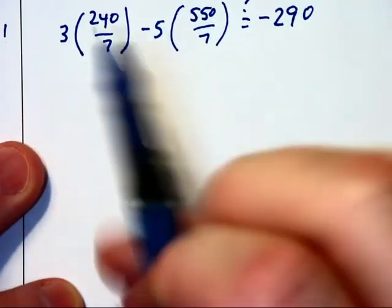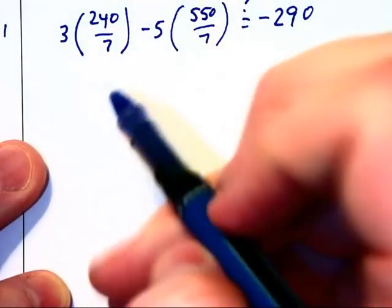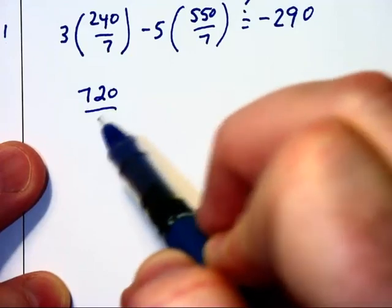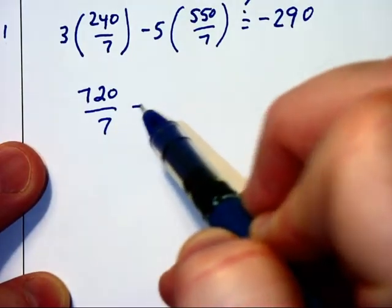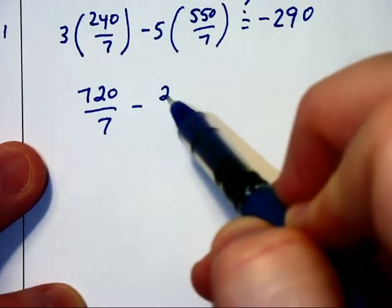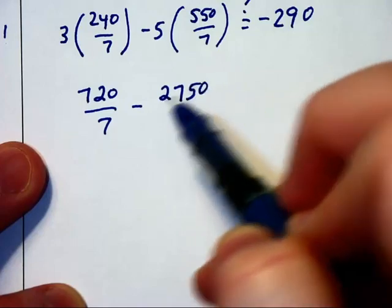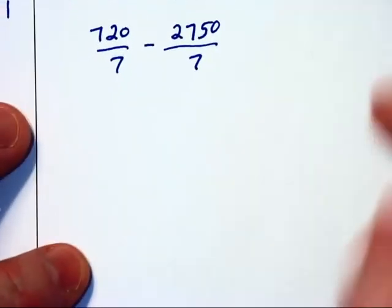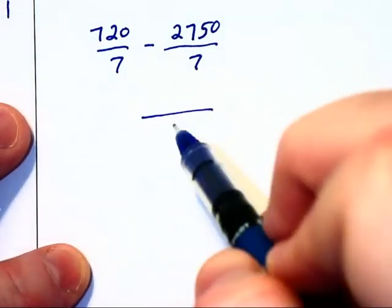Another mess we have here. 3 times 240, well, that will be 720 over 7, minus 2750 over 7. Let's take a look at that. We know it's going to be over 7.